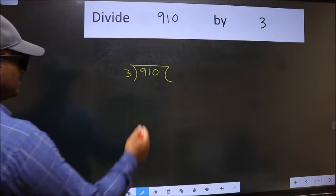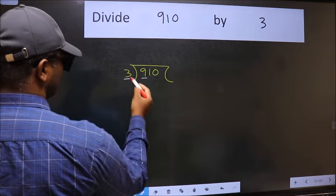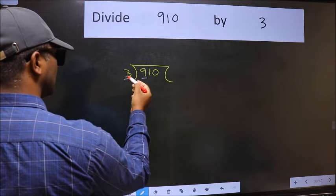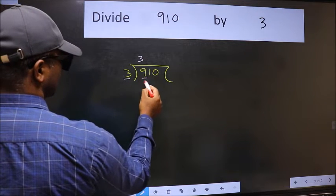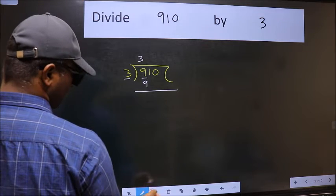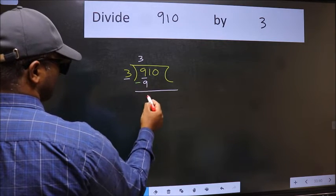Next. Here we have 9 and here 3. When do we get 9 in the 3 table? 3 times 3 is 9. Now we should subtract. We get 0.